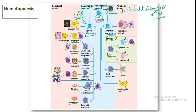The lymphoid progenitor is named because B and T cells are present in lymph, the whitish fluid from blood. From the lymphoid progenitor, natural killer cells, B cells, and dendritic cells can develop. If the lymphoid progenitor migrates to the thymus, it becomes a T cell — either a T helper cell or a T cytotoxic cell. This is the overview of hematopoiesis.